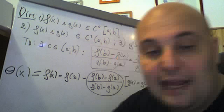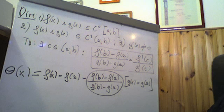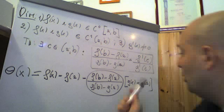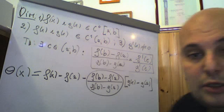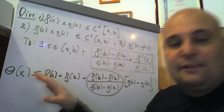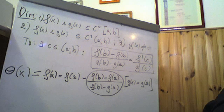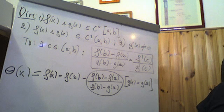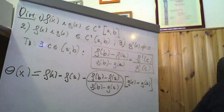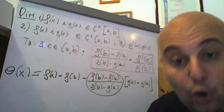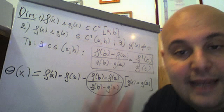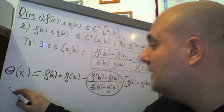Abbiamo che f(x) per ipotesi è continua su [a,b] chiuso, e g(x) è anch'essa per ipotesi continua su [a,b] chiuso e limitato. f(b), f(a) e g(a) sono costanti. Quindi la funzione ausiliaria θ(x) è certamente anch'essa continua su [a,b] chiuso e derivabile su (a,b) aperto e limitato, perché è ottenuta come differenza fra funzioni continue, f(x) e g(x), meno costanti che sono certamente continue.